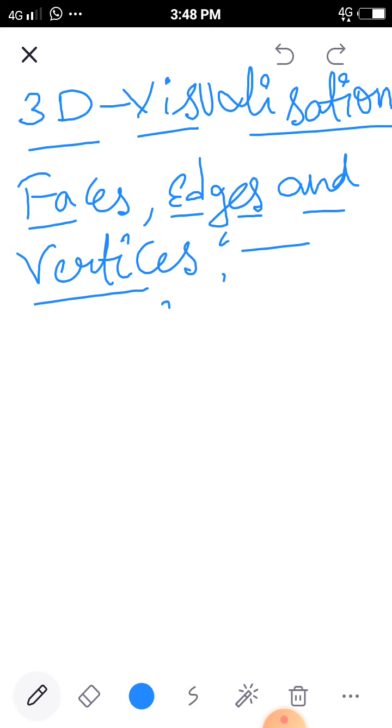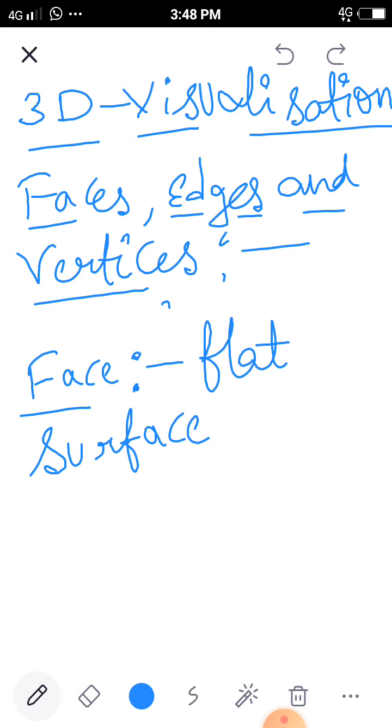A polyhedron can be described by its faces, edges and vertices. Now what is a face? A face is a flat surface of the solid. For example, we are writing on a whiteboard. The whiteboard is a flat surface. It is also a face of a solid. Face is a flat surface of a solid.